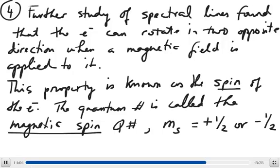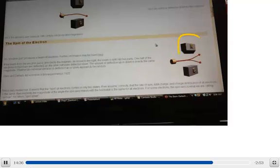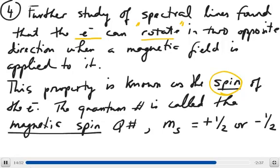The three quantum numbers describe only the orbital space. Further study of spectral lines revealed that the electron can rotate in two opposite directions when a magnetic field is applied — what we call the spin of the electron. When electrons pass through a magnetic field, some deflect up and some deflect down: the two spin states. This gives us the fourth quantum number, the magnetic spin quantum number m sub s, which can only be plus one-half or negative one-half.